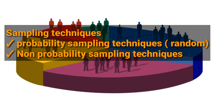Let's look at the sampling techniques. We have two: the probability sampling techniques, also known as random sampling techniques, and the non-probability sampling techniques. We are going to look at each of them in detail.